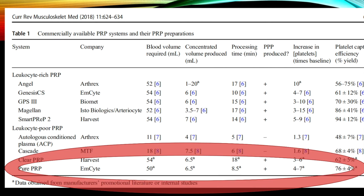Our company recommends the M-Site system, and here's why: a comparison study of many different systems showed that M-Site produced a really good concentrated volume, was capable of producing PPP, and achieved a five-times increase in platelets from baseline — clinical grade. The higher the increase in platelets the better, up to a point; going to ten, eleven, or twelve times is probably too far.